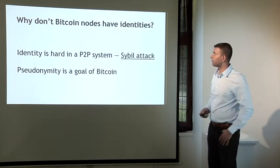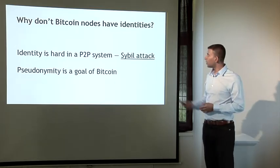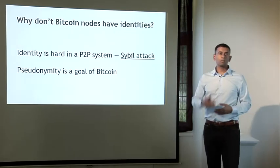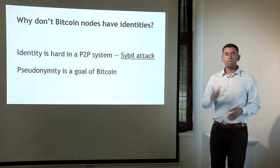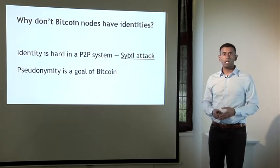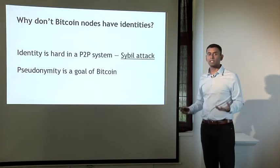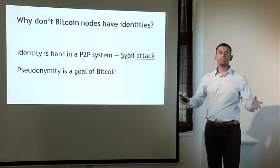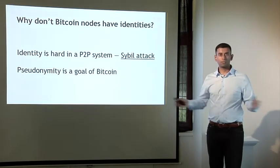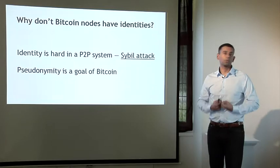But why is it exactly that Bitcoin nodes don't have identities? Well, it's for a couple of reasons. One is that if you're in a decentralized model in a peer-to-peer system, there is no central authority to give identities to nodes and verify that they're not creating new nodes at will. The technical term for this is a Sybil attack. Sybils are just copies of nodes that a malicious adversary can create to look like there are a lot of different participants when, in fact, all those pseudo-participants are really controlled by the same adversary.